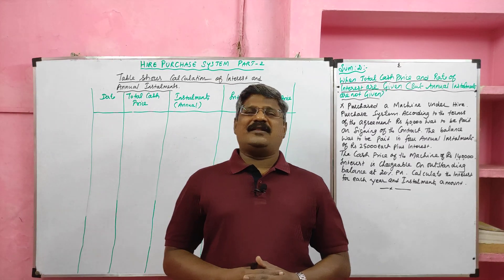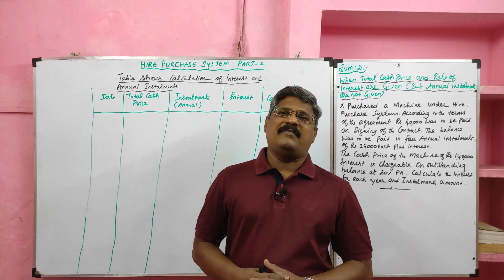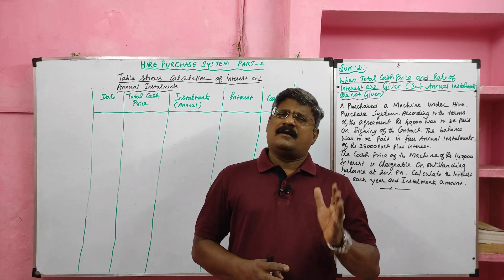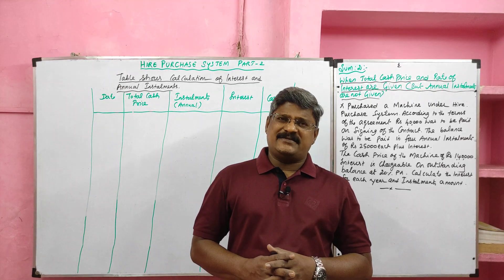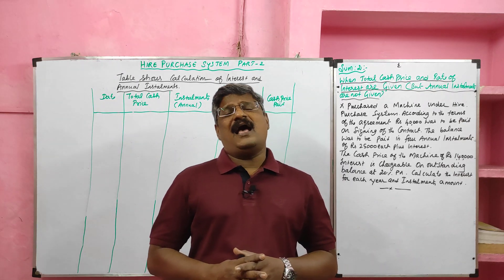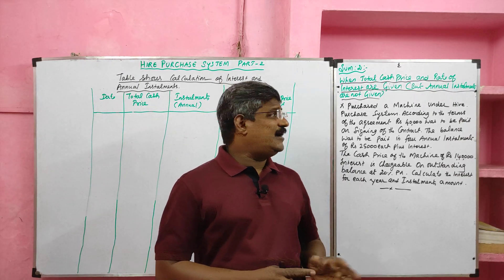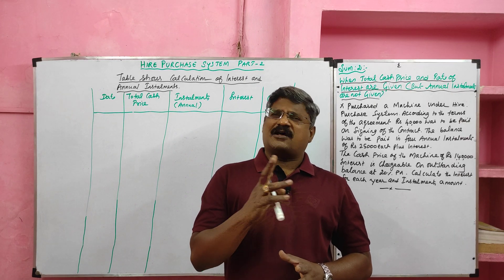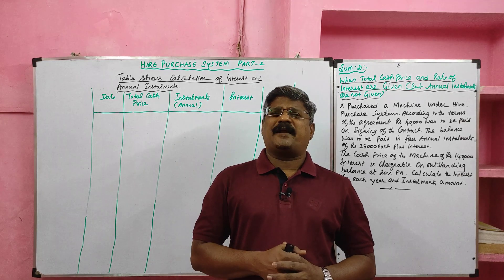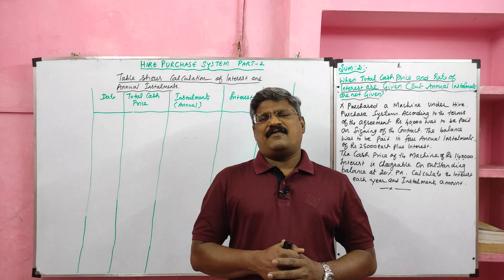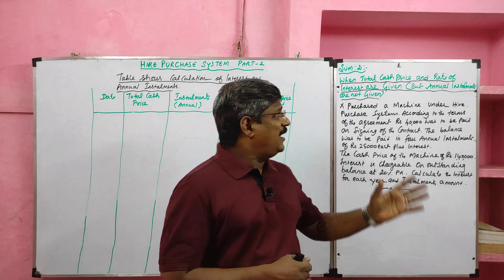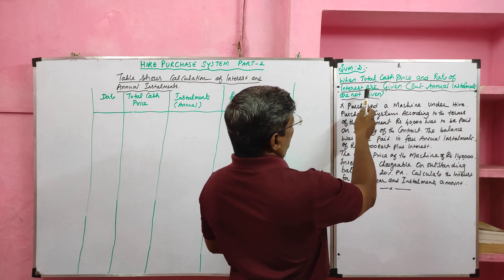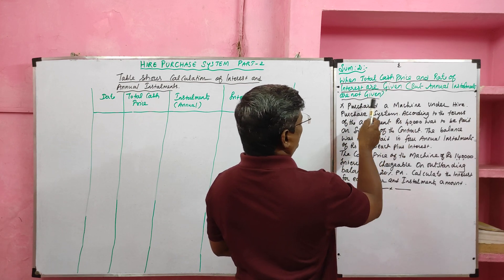Students, today we are going to solve the second problem in relation to the hire purchase system. In the first problem, total cash price, annual rate of interest, and annual installments are given. But in the second problem, annual installments are not given — only cash price and annual rate of interest will be given. Look at Problem Number Two: when total cash price and rate of interest are given but annual installments are not given.